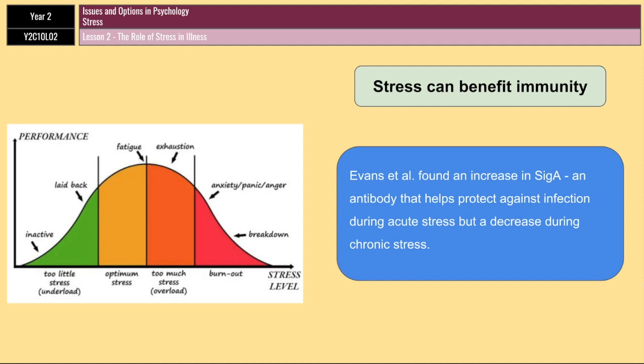This was also supported by a meta-analysis by Segerstrom and Miller in 2004, who reviewed almost 300 studies of stress and the immune system. They found that short-term stressors actually promote the body's ability to fight infection. However, the longer the stress goes on, the more the immune system shifts from potentially adaptive changes to potentially harmful ones. So acute stress increases immune activity, but it is chronic stress that decreases immune activity.